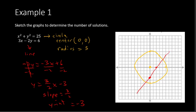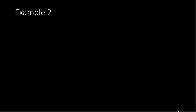Notice that the graph shows the line intersecting the circle at two different spots — right here and right here. Therefore, we have two solutions to this quadratic system.